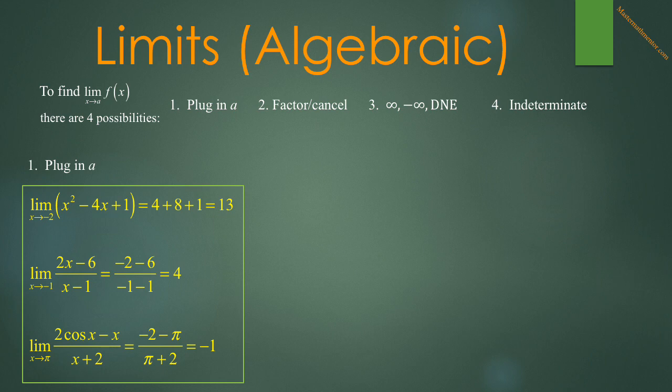In the limit of x squared minus 4x plus 1 as x approaches negative 2, plug in negative 2 and we get 4 plus 8 plus 1, which is 13. In the second example, the limit as x approaches negative 1 of 2x minus 6 over x minus 1, plugging in negative 1 for x, we get 4. And finally, the limit as x approaches pi of 2 cosine x minus x over x plus 2, plugging in pi for x gets us to negative 1.